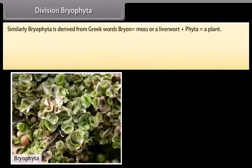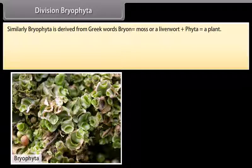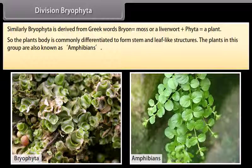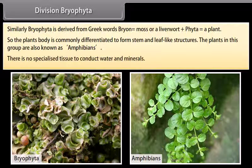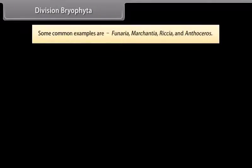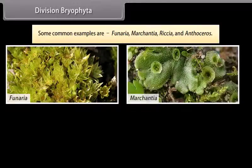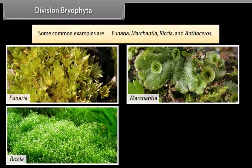Division Bryophyta: Bryophyta is derived from Greek words 'Bryon', which means moss or liverwort, plus 'phyta', which means plant. The plant bodies are commonly differentiated to form stem and leaf-like structures. The plants in this group are also known as amphibians of the plant kingdom. There are no specialized tissues to conduct water and minerals. Some common examples are Funaria, Marchantia, Riccia, and Anthoceros.